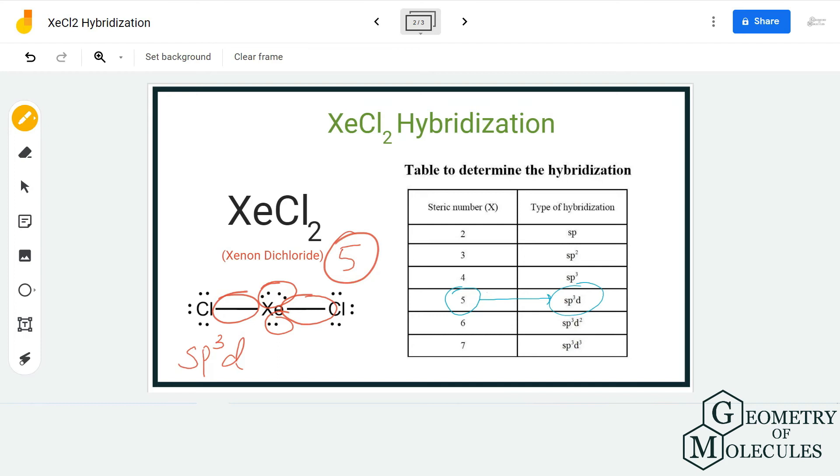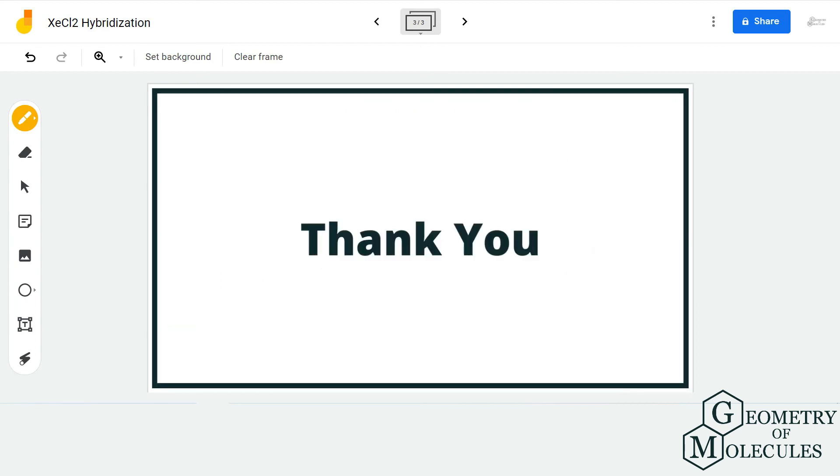they are bonding pairs of electrons or non-bonding pairs of electrons. Generally, this is the most convenient way to find out the hybridization of XeCl2. I hope this video helps you to understand the entire method to